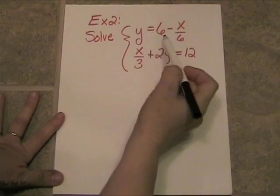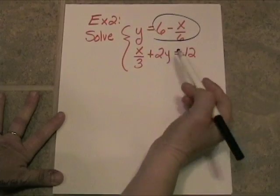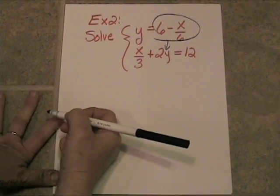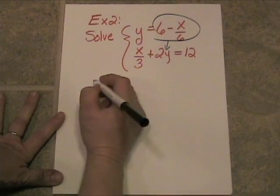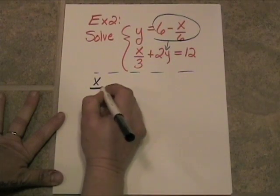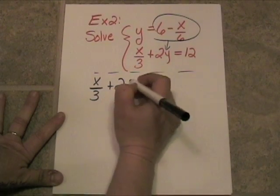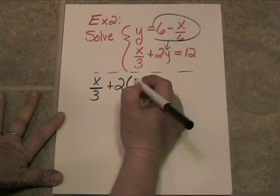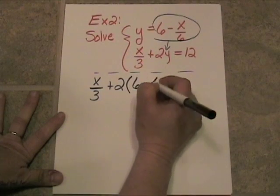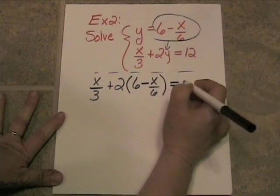All right. We know that the y is equal to what y is equal to. So let's take this quantity and substitute it down into the second equation where we see the y. And the resulting equation is going to look like x over 3 plus 2 times the quantity 6 minus x over 6, close quantity, and all that will be equal to 12.